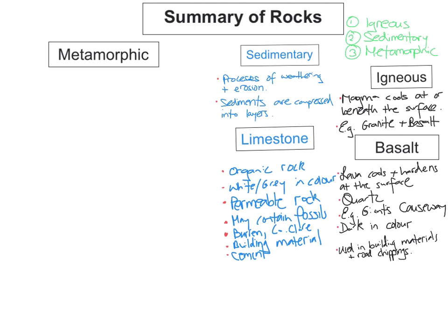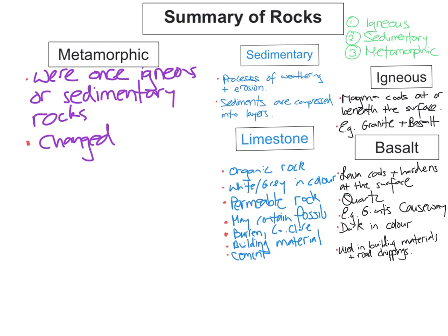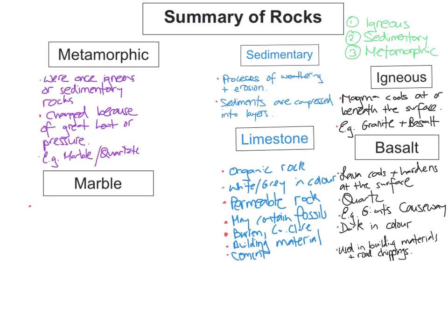An example we have are marble and quartzite. So metamorphic rocks were once igneous or sedimentary rocks. And this is the important part. They changed because of great heat or pressure. And an example you can have is marble or quartzite. And we're going to look at marble.